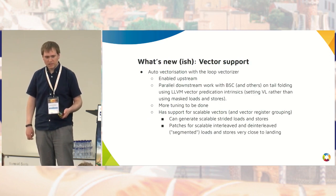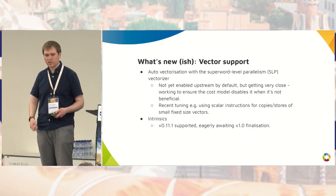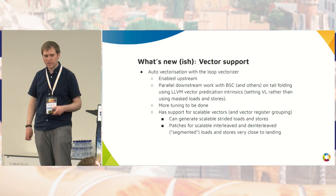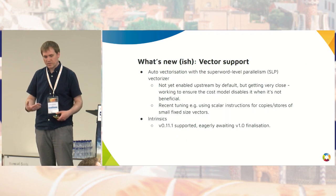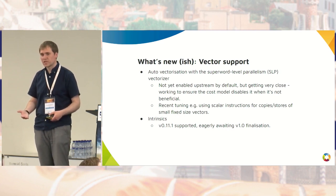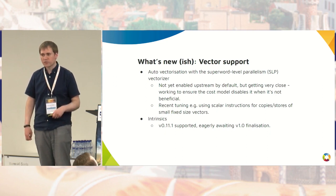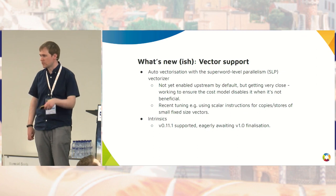In terms of what's been done recently, there's been a lot of work on auto-vectorization. There are two forms within LLVM: the loop vectorizer and the SLP vectorizer (super-level parallelism). The loop vectorizer is enabled upstream by default. There's also additional downstream work with BSE and others working on one particular tail-folding approach with vector predication intrinsics. We've been doing recent work with a customer to add support for scalable strided loads and stores and scalable interleaved and deinterleaved loads and stores. We're also very close to enabling SLP vectorization by default — the main reason it's not is just the need to adjust the cost model.